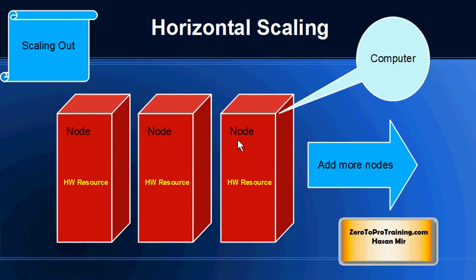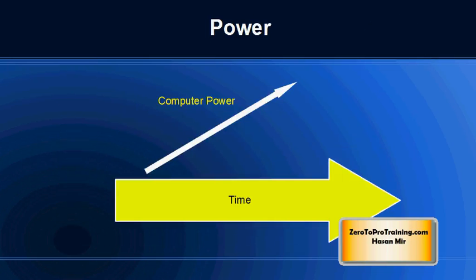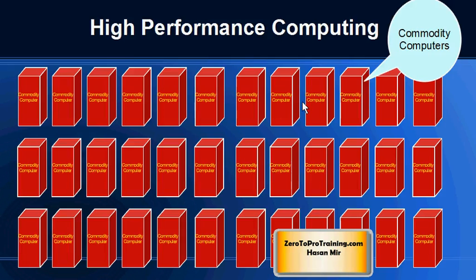This is where linear scaling comes in handy, and it is very affordable — because the computers used in linear scaling are normal commodity computers, which are very affordable in price. The prices of computers have gone down with the passage of time, while the power of computers has increased. The term 'commodity computer' represents a computer that is affordable, easily available on the market, and not super powerful.